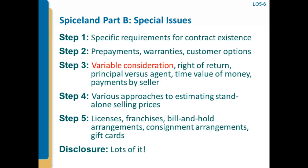What I've got here are the steps and issues that come up with each of them, and that's actually how Part B is organized — to help students plug into that five-step framework. Step one involves specific requirements for determining whether you have a contract. Step two — figuring out your separate performance obligations — has some tricky areas: prepayments, quality assurance or extended warranties, customer options. Those can or cannot be separate performance obligations, depending on whether they meet the criteria for being distinct.